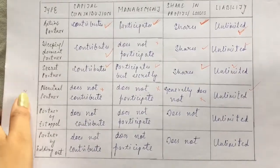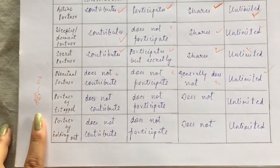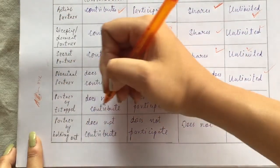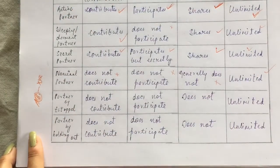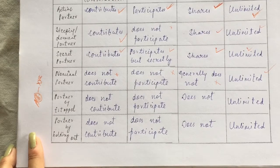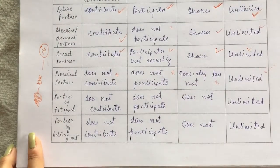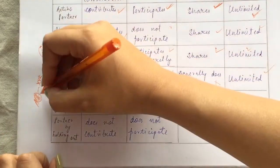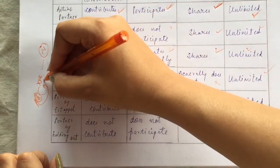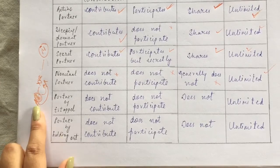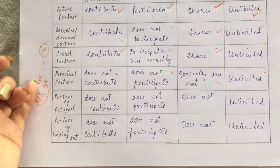Then comes partner by estoppel and partner by holding out. To understand partner by estoppel, consider this example: A and B are two friends. B works in XYZ company. XYZ company has to deal with M company. B takes A along to the deal meeting.